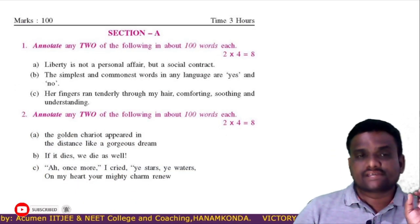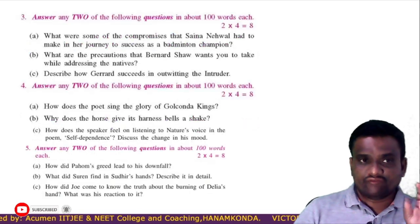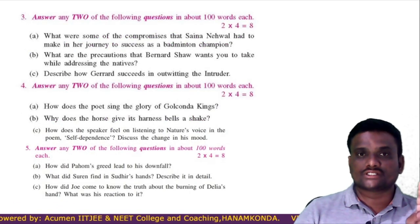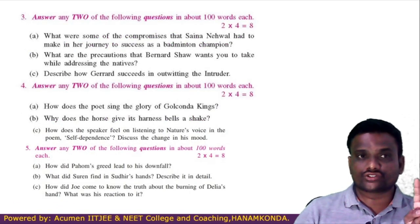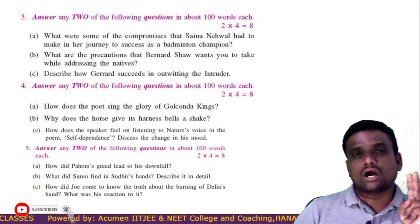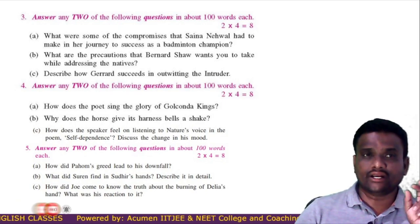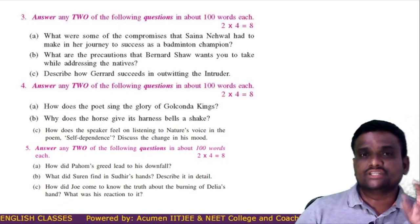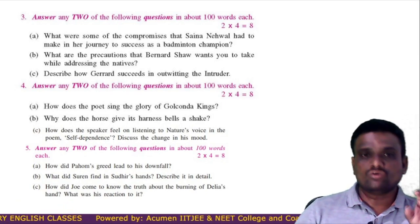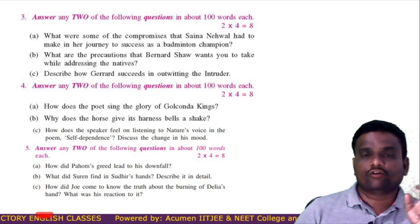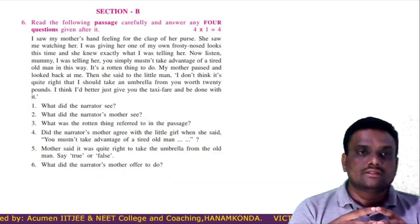In section A, every bit has 3 questions. Among the 3 questions, if you answer 2 of them correctly, you will be awarded 8 marks for each of the bits. So 5 bits times 8 marks equals 40 marks.